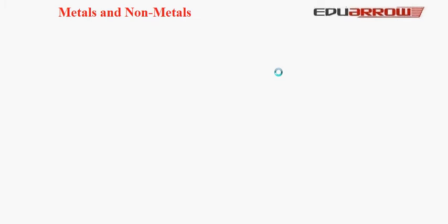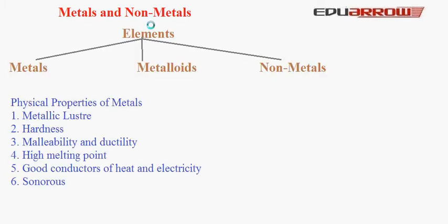Welcome to EduAero's Classroom. In this tutorial, we will learn about Metals and Non-metals. All the elements are divided into three categories: Metals, Metalloids, and Non-metals. First, let us study the physical properties of metals.